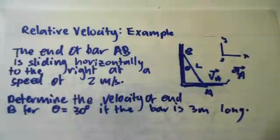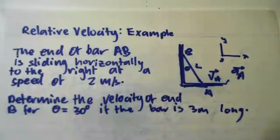Hey everyone, this is just a quick relative velocity example. It simply says that the end of bar AB is sliding horizontally to the right at a speed of 2 meters a second. Determine the velocity of end B for theta equals 30 degrees if the bar is 3 meters long.